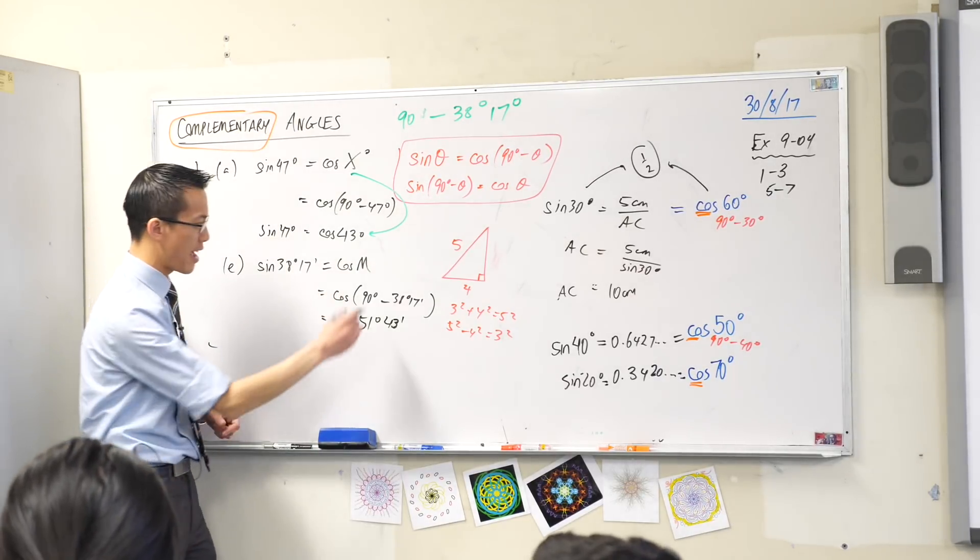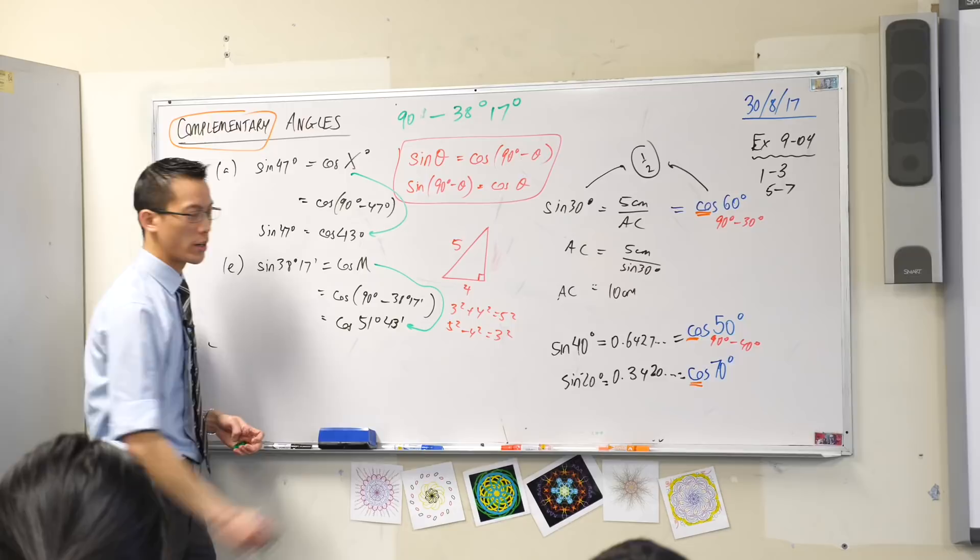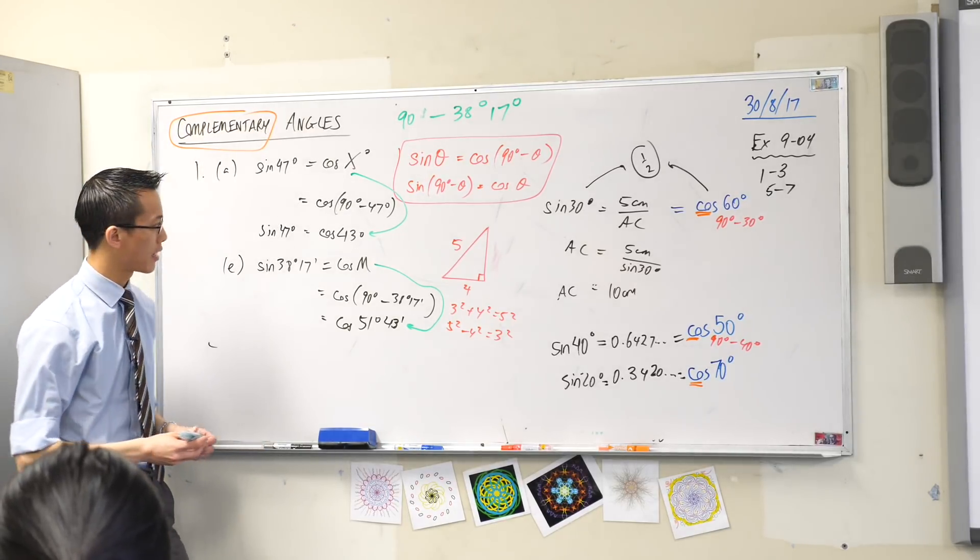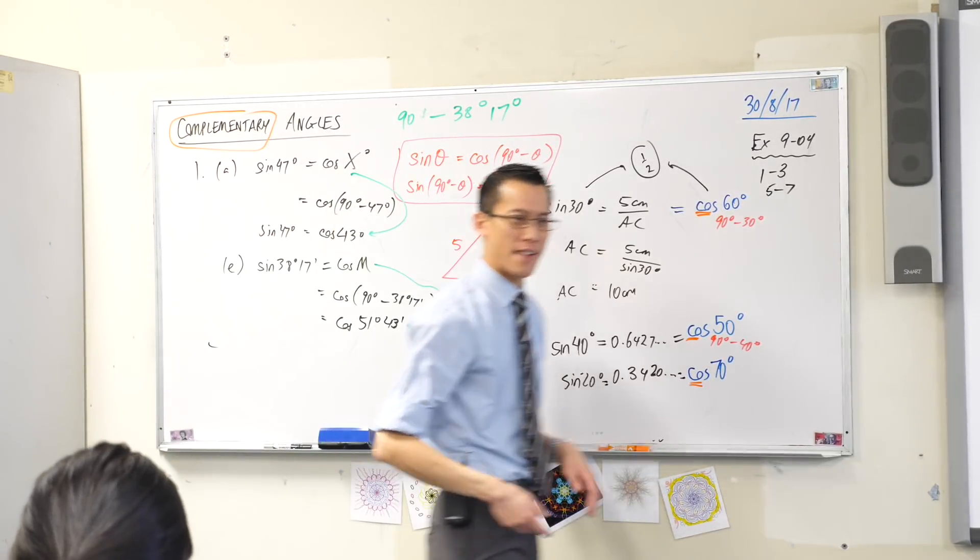So in the second case, M is equal to 51 degrees, 43 minutes, okay? So this is a really nice, simple way to have a look at it.